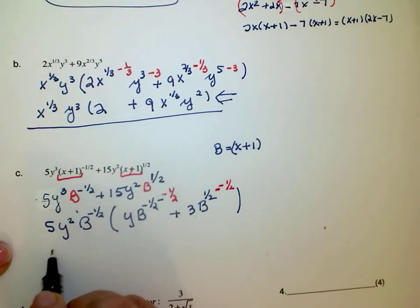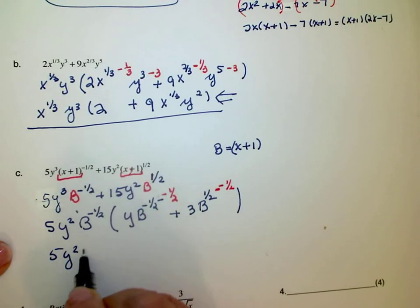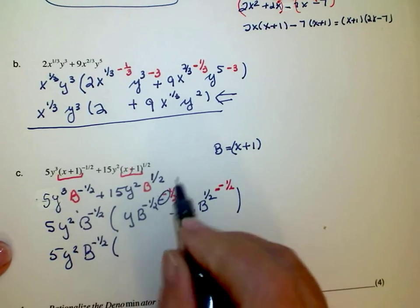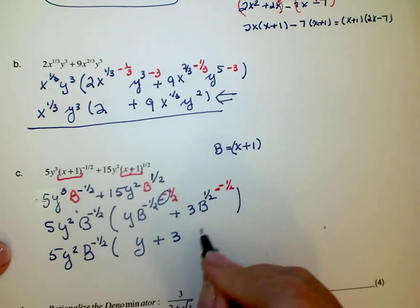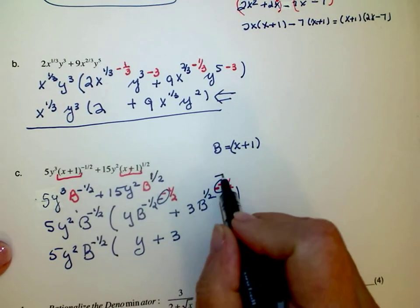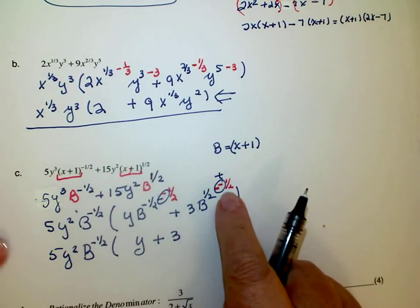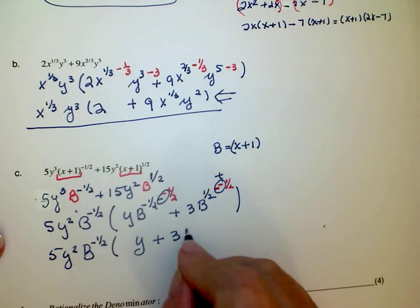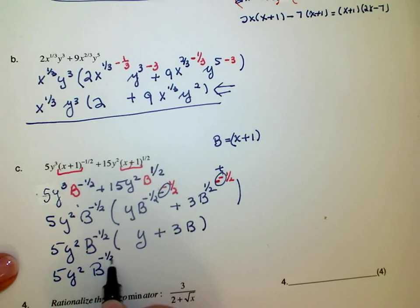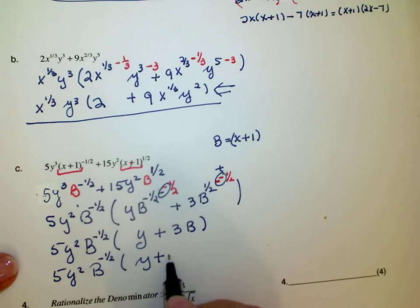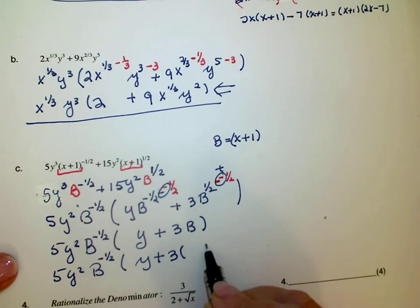So this becomes 5y squared b to the negative one-half times, that's b to the zero which is one. And one-half plus one-half is one b. So this is 5y squared b to the negative one-half times y plus 3b.